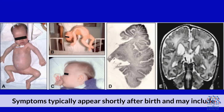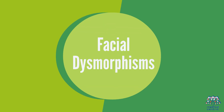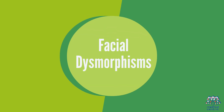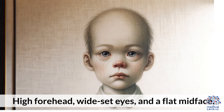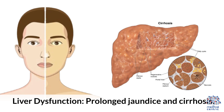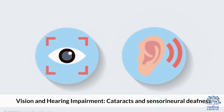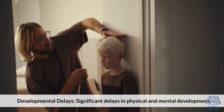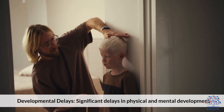Symptoms typically appear shortly after birth and may include facial dysmorphisms such as a high forehead, wide-set eyes, and a flat midface. Neurological impairments include severe muscle tone issues leading to poor muscle coordination. Other symptoms include liver dysfunction with prolonged jaundice and cirrhosis, vision and hearing impairment including cataracts and sensorineural deafness, and significant delays in physical and mental development.